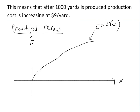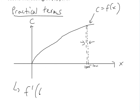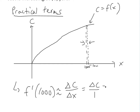In practical terms, if you look at a graph where the cost function is increasing as you produce more, after producing 1,000 yards, if you were to produce one more yard — at 1,001 yards — you get a point very close on the graph. The slope between those two points is very close to the instantaneous rate of change, so we can use the approximation that the derivative at 1,000 is roughly equal to Δc over Δx.